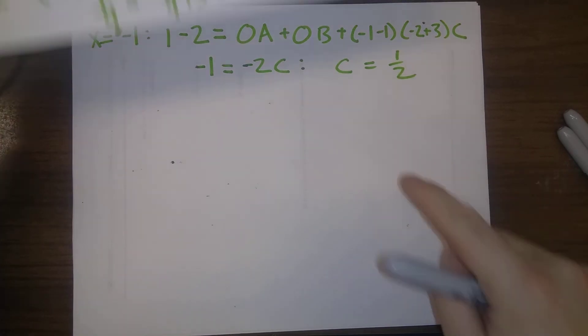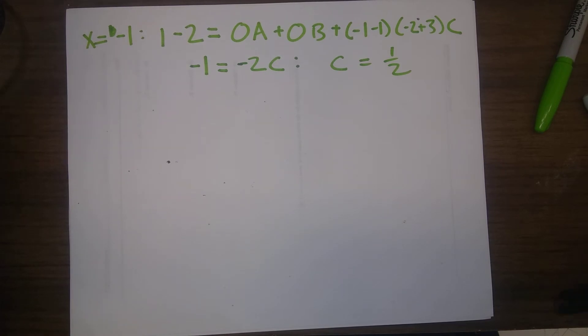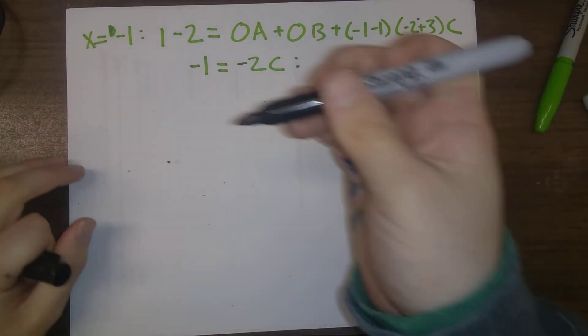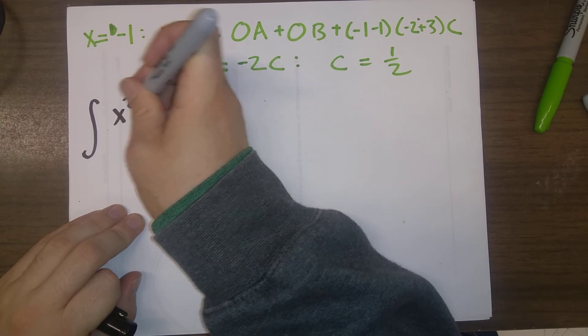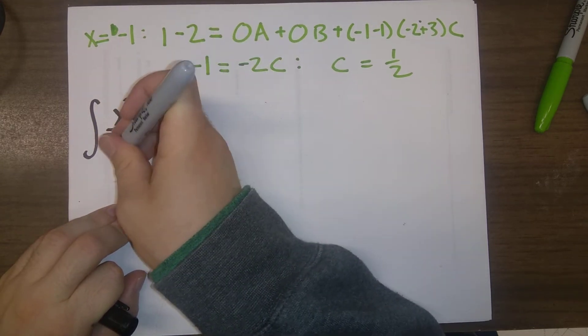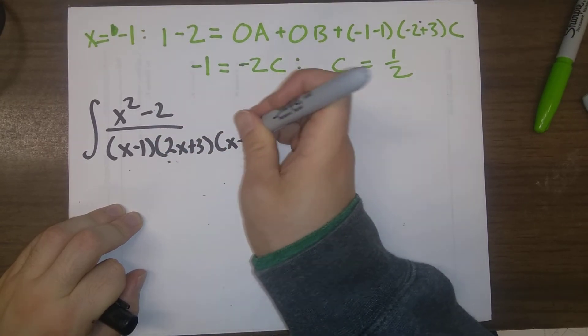So, C is equal to 1 half, B is equal to 1 fifth, A is equal to minus 1 tenth. And so, putting all of this together, we conclude that the integral of x squared minus 2 over x minus 1 times 2x plus 3 times x plus 1 is equal to: